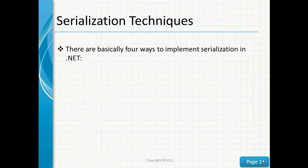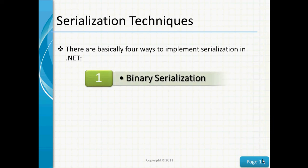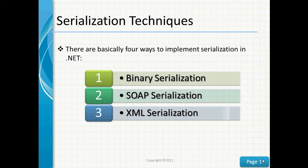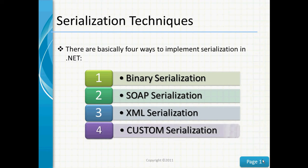There are basically four ways to implement serialization in .NET. We've talked about these before in the other videos, but just to reiterate, we can use binary serialization, SOAP serialization, XML serialization, and custom serialization.